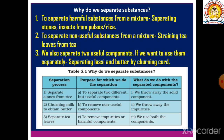There is a table here: why do we separate substances? We need to identify what the separation process is, what the purpose is, and what we do with the separated components. The first example is separating stones from rice — here one component (stones) is not useful and we throw it away, while the rice we eat.